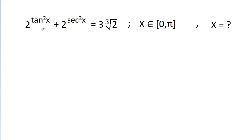In this video, we have given that 2 power tan squared x plus 2 power sec squared x is equal to 3 times cube root of 2, and x ranges from 0 to pi. We have to find x.